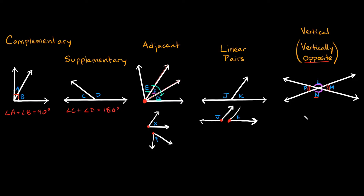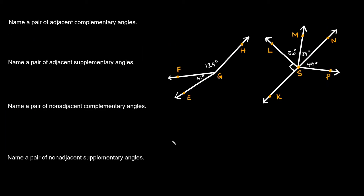Now that you have an idea of what each of these are, let's go over a couple of examples to tie it all together. Here's our first problem with two figures we'll be referring to. The first question says: name a pair of adjacent complementary angles. Remember, adjacent means next to each other, and complementary means they add up to 90 degrees. So it looks like this angle right here — 56 plus 34.